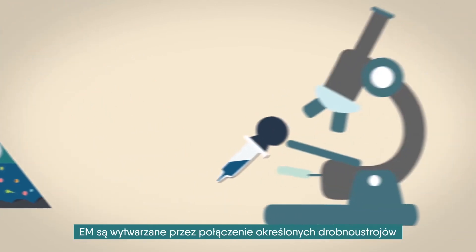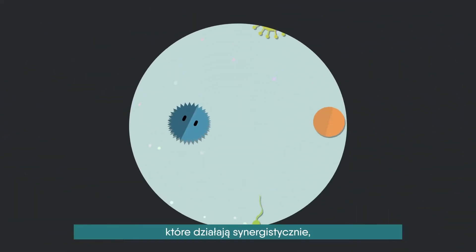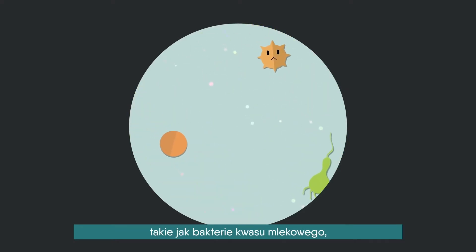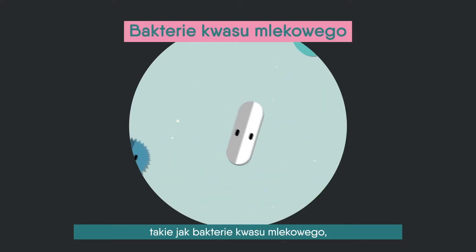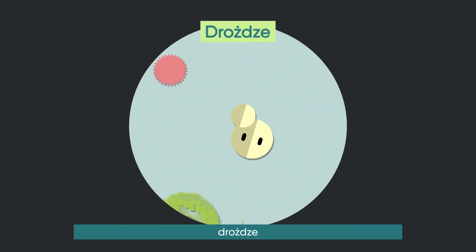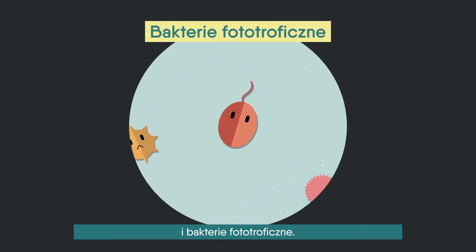EM is created by combining specific microorganisms which work together synergistically, such as lactic acid bacteria, yeast, and phototrophic bacteria.